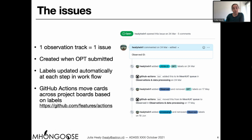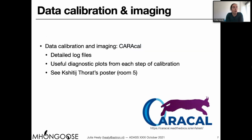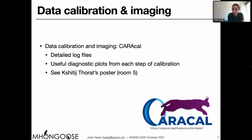So how do we keep a record of the data reduction process? Data reduction and calibration is done using the CARACal pipeline. I'm not going to go into the details of how CARACal works, as that's another entire talk, but there is a poster on CARACal — I think it can be found in poster session five. CARACal has some really useful features that help us keep clear records of our data reduction. The detailed log files contain all the observation information, such as how many dishes are in use and the various flagging statistics. The pipeline also produces a number of diagnostic plots that we use to assess the quality of the calibration process.